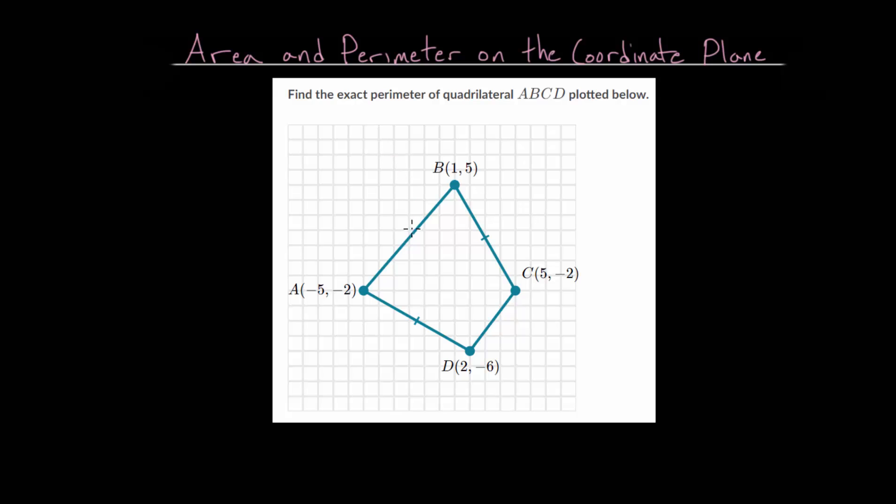Remember that perimeter is just the length around the outside of the shape. So if we can find these side lengths and then just add them together, we can figure out the perimeter. And area is how much flat space an object takes up.